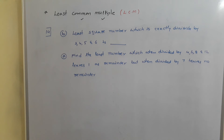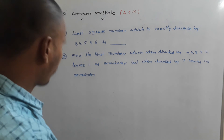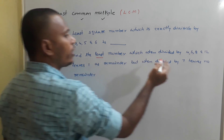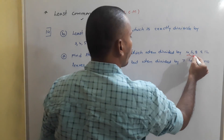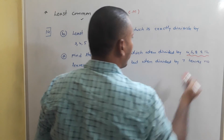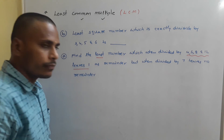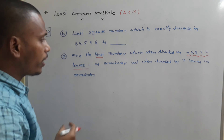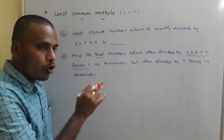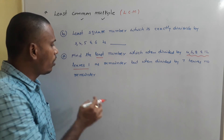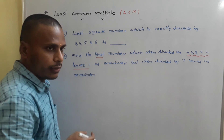Now 14a and 14b — these two problems are a bit different from the standard type 13 problems. Problem 14a: find the least number which when divided by 4, 6, 8, and 12 leaves 1 as remainder, and when divided by 7 leaves no remainder.